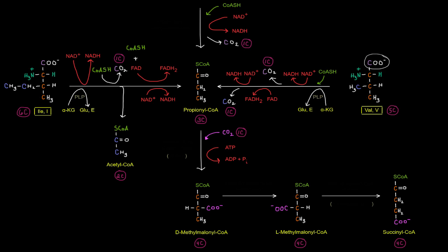So we're going to be left with those three orange carbons. Those three orange carbons are going to give propanyl CoA. Okay. So the point is that both of those amino acids give propanyl CoA. In fact, all of these amino acids, their carbons ended up in propanyl CoA.